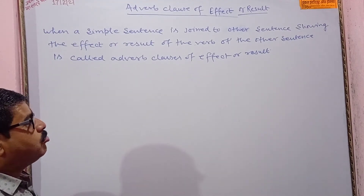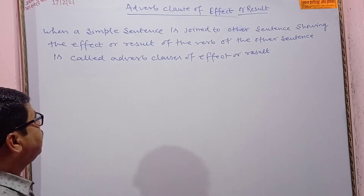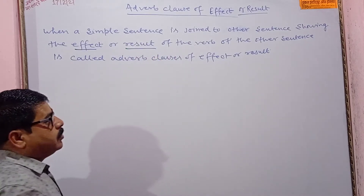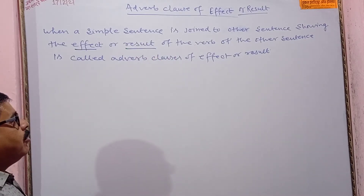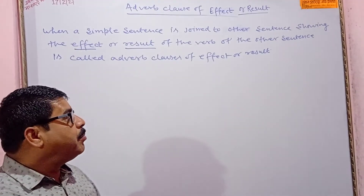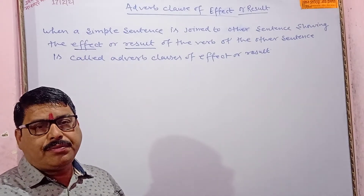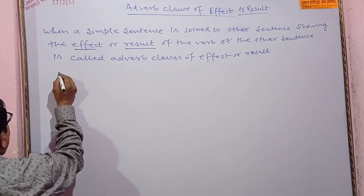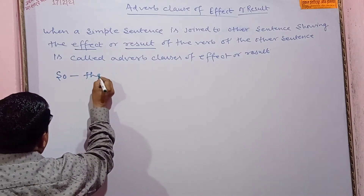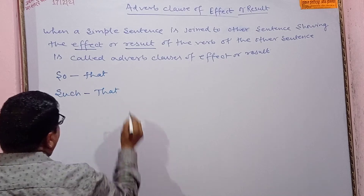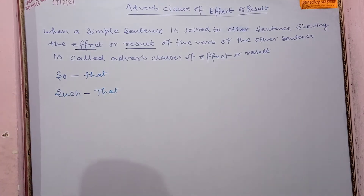When a simple sentence is joined to another sentence showing the effect or result of the verb of the other sentence, it is called Adverb Clause of Effect or Result. The conjunctions used are 'so that' or 'such that'.